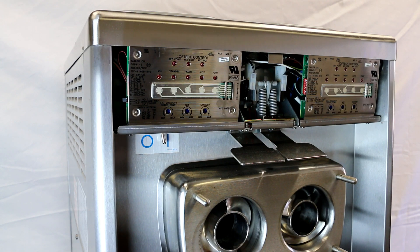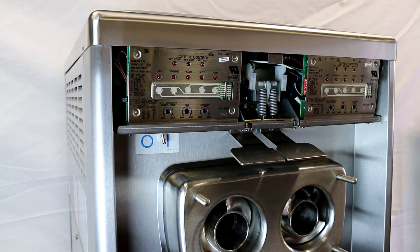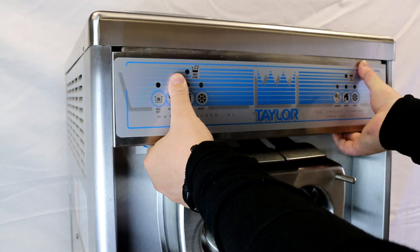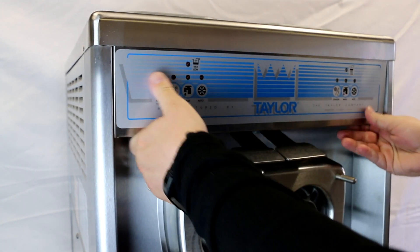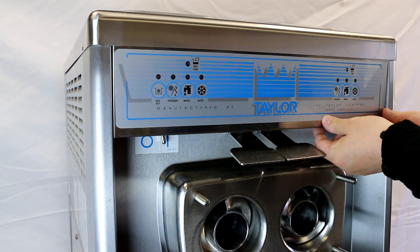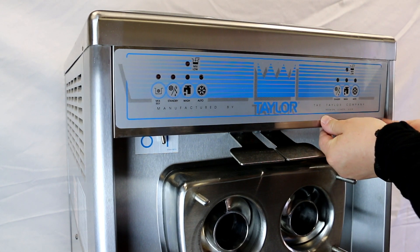The universal probe we use in this video is a really good part to have on hand if you have Taylor 794s, 754s, 791s, all of the soft tech controlled machines 339, 336. It's a really good part to have on hand.